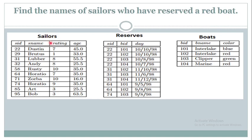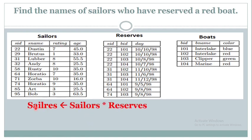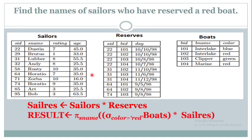Again, I need to join Sailors and Reserves. In order to find the names of the sailors who have reserved a boat, I need to perform a natural join operation between Sailors and Reserves. The resultant relation is the information of the sailors who have reserved the boat. Now, we want the names of the sailors who have reserved a red boat, so the resultant relation has to be joined with Boats. The Sailors-Reserves relation is joined with Boats, and again there is a condition: the color of the boat should be red. We have a Sigma operation where color is equal to red.